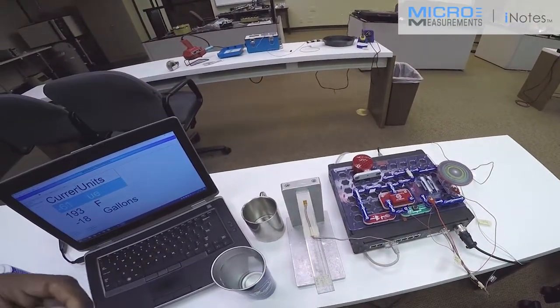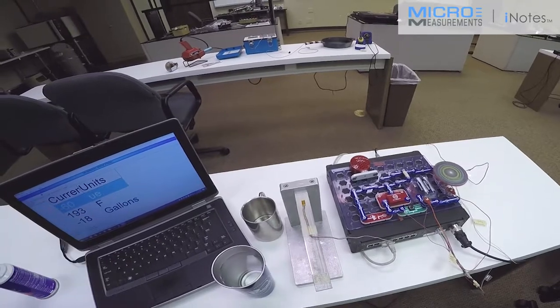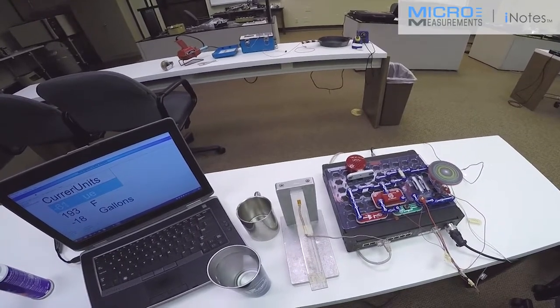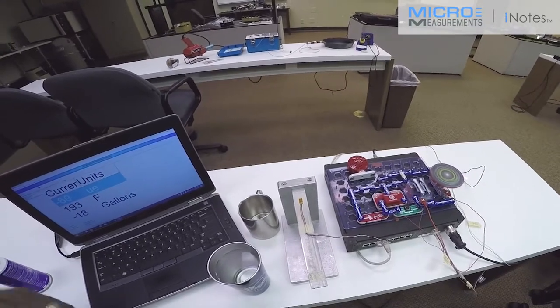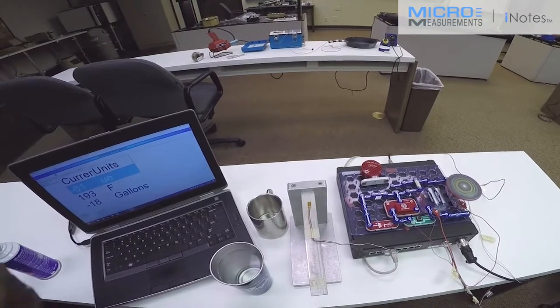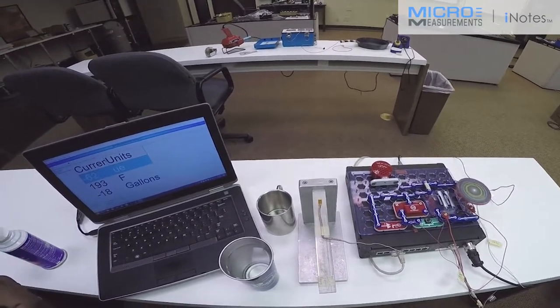So the 8000 could easily send a message from itself over to let's say an MTS or INSTRON test frame to be able to tell the frame to either start the crosshead to move or tell it to stop the crosshead from moving. Those are just a couple of examples of how we can use the relays.